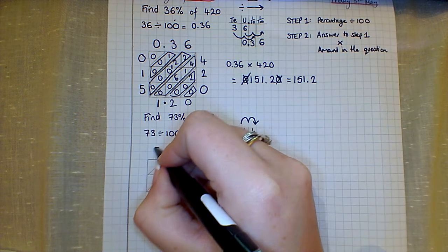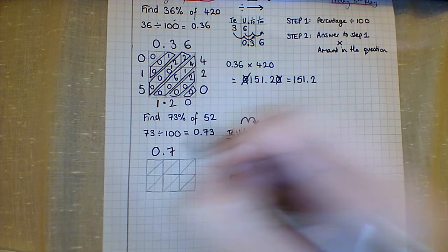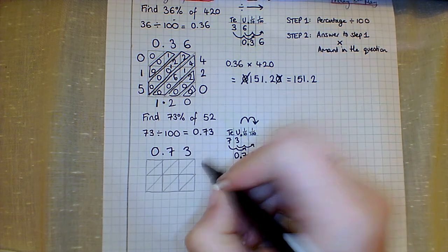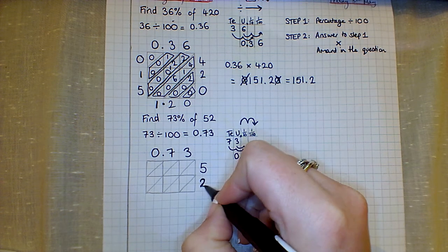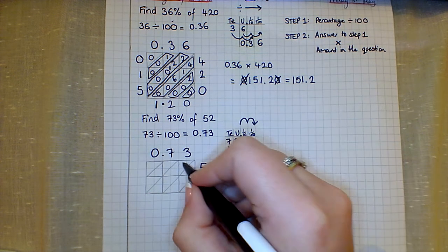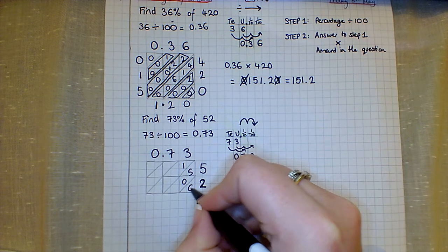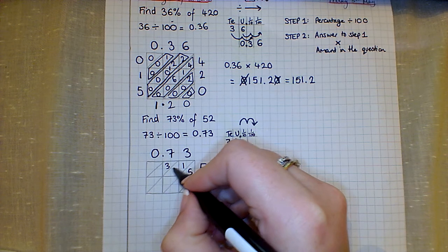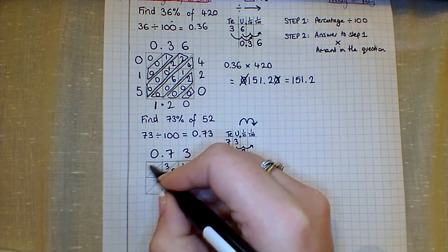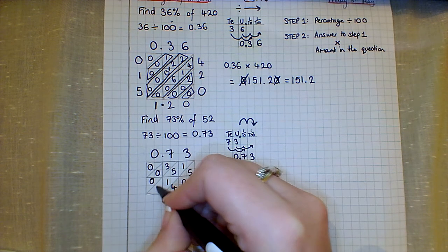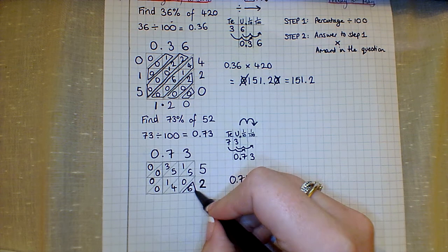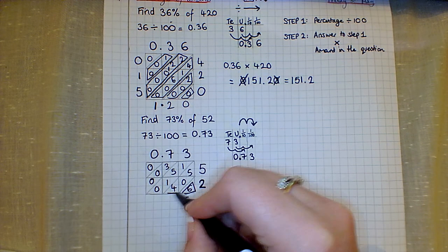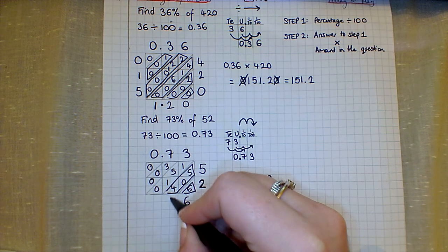The decimal should have gone at the top and the amount, so the non-percentage number in the question, down the side. That's 15, that's 6, that's 35, that's 14, and 0 times anything is just 0. All right, let's add up these diagonals. So we've got 6, we've got 9.